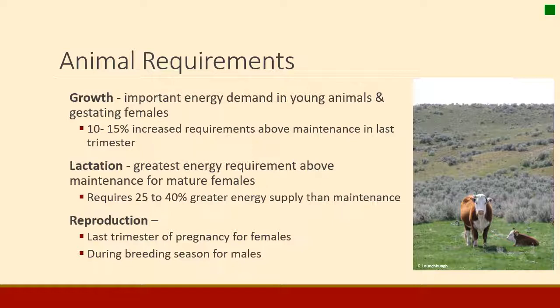After the young is born, lactation becomes important for the female — it's the greatest requirement above maintenance for mature females, requiring 25 to 40 percent more energy than maintenance. Reproduction also requires energy, particularly from males during breeding season to find females, service them, and travel. Males on the range, whether wildlife or livestock, can lose a lot of body condition during breeding season from that travel.